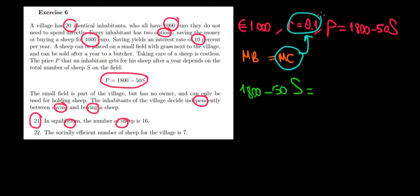10 percent on 1000 euros would make us 1000 multiplied by 1.1, so that would be 1100 euros. The opportunity cost, the marginal cost in this case, would be 1100 euros.